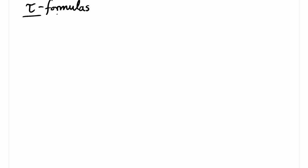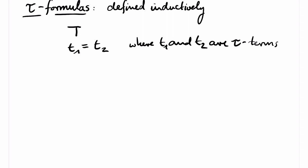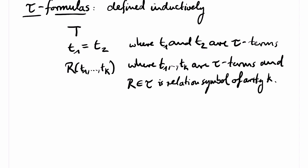We now define tau formulas. They are defined inductively. A first order formula is either of the form top as in propositional logic or of the form T1 equals T2. So here equals is really just a symbol for equality. And T1 and T2 are tau terms. Or the formula is of the form R opening bracket T1 comma and so on until Tk closing bracket where T1 up to Tk are tau terms and R is a relation symbol from our signature tau of arity k. These three cases serve as the induction basis and they are called atomic formulas.